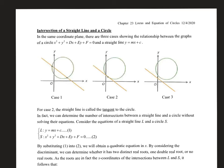In this part, we will be talking about the intersection of a straight line and a circle. There should be three cases to consider when we talk about the intersections of them.